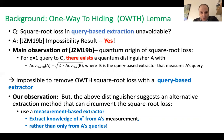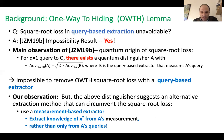Our main observation is that if we look more closely at Jiang et al.'s square root distinguisher, it suggests another way to extract the secret that circumvents the square root loss. We call this a measurement-based extractor: instead of extracting the secret from the queries that the distinguisher makes to the oracle, it extracts the secret from the quantum measurements that the distinguisher makes.